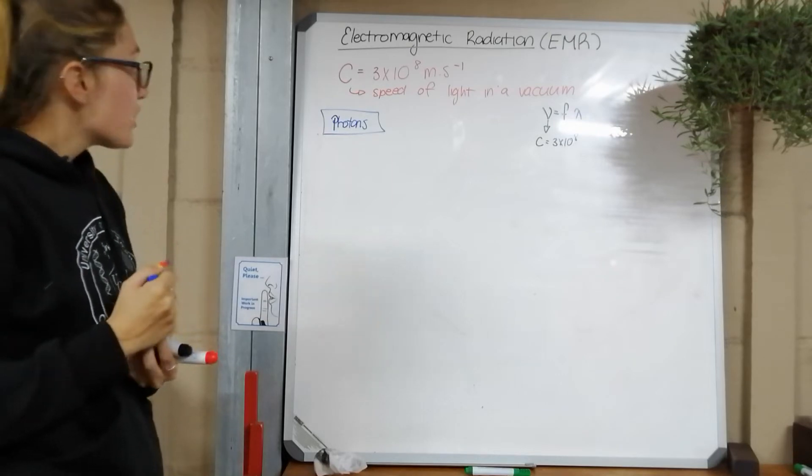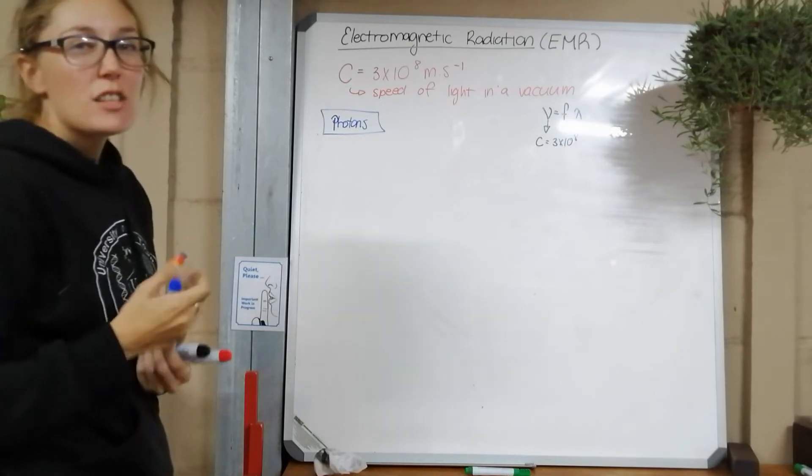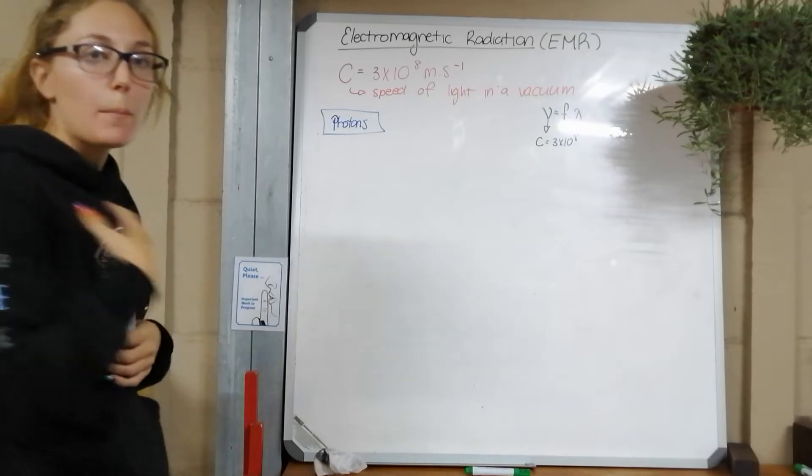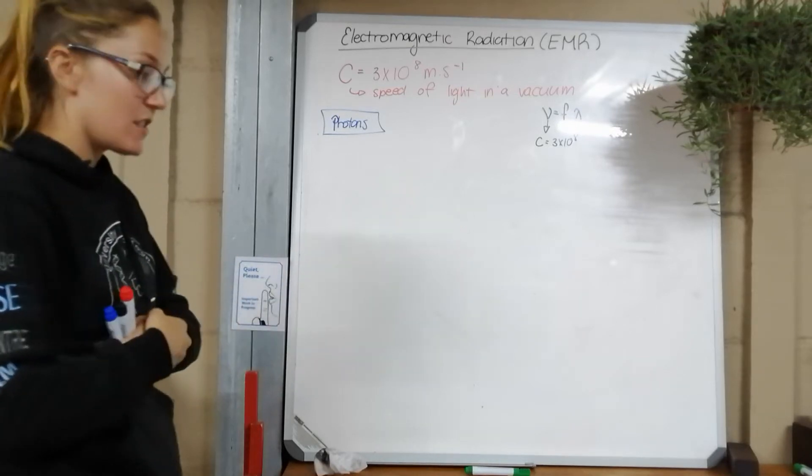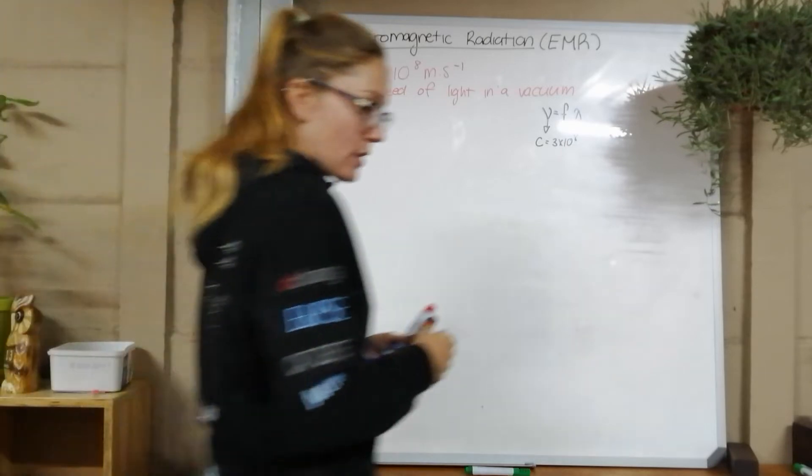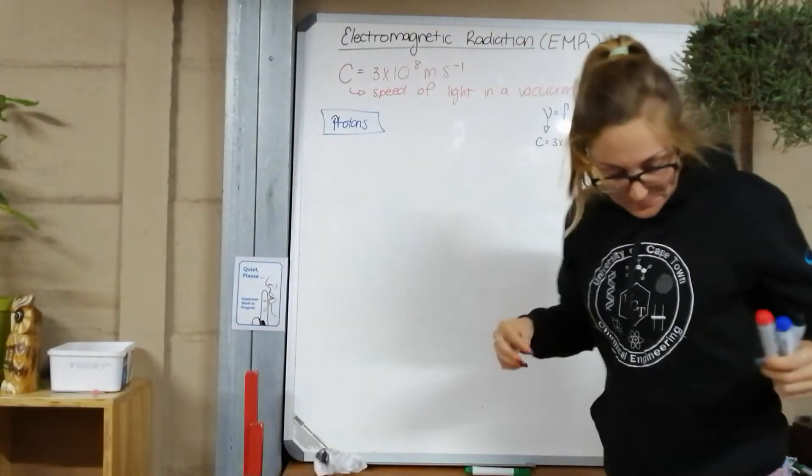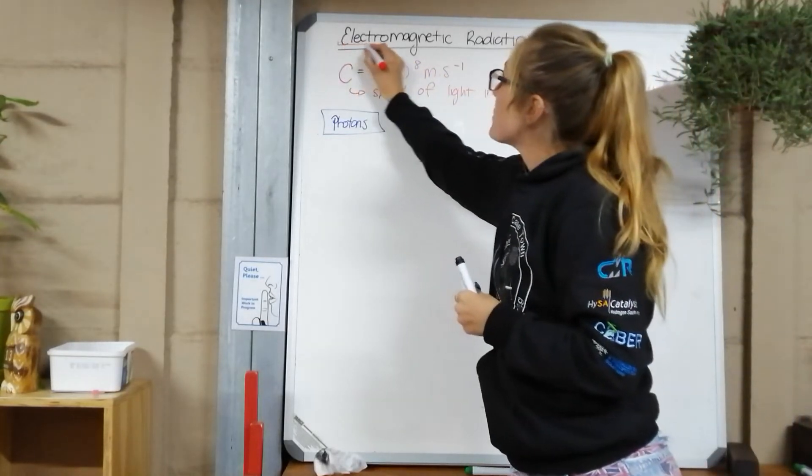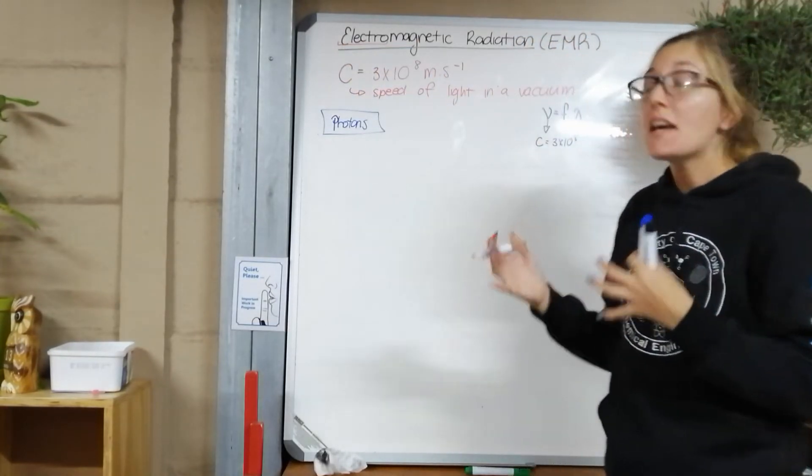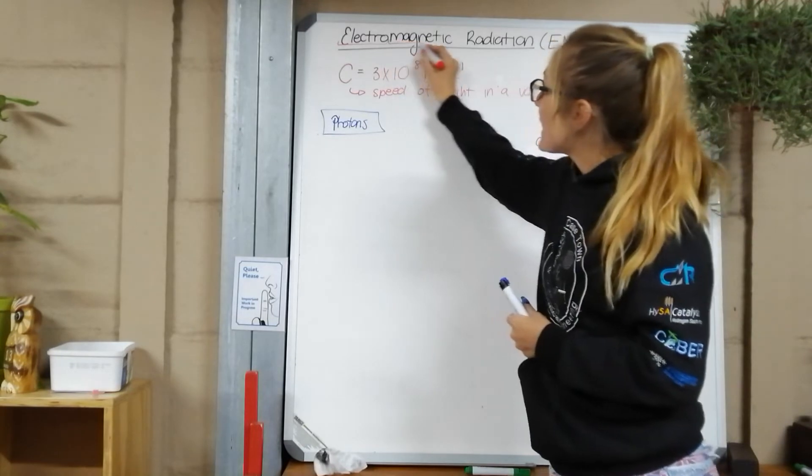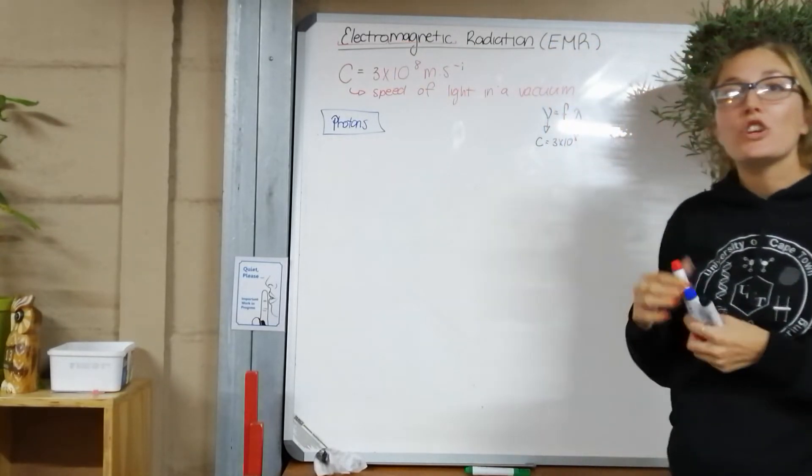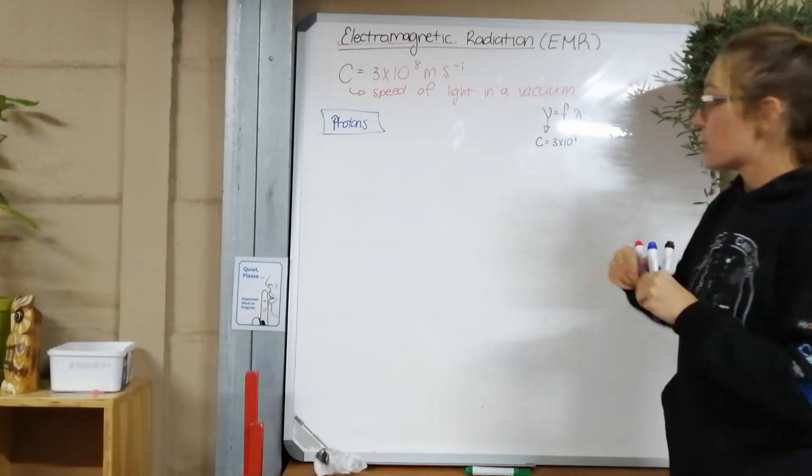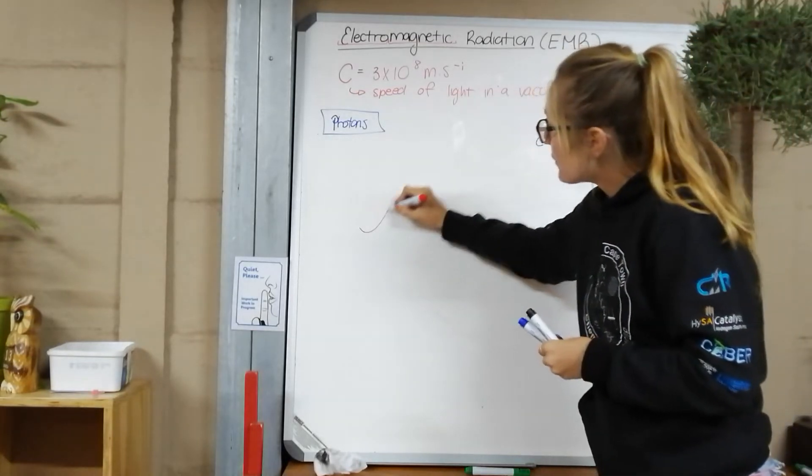Later on in the topic we'll talk about how to work out the energy of a photon. Now also important in electromagnetic radiation, there's a little bit of theory here, is how electromagnetic radiation actually propagates, how it works, how it happens. So you're going to bear with me, I'm going to try my best to draw this. We've got electromagnetic radiation, the word is made up of two parts, so we've got electric fields, and simultaneously we have magnetic fields. Now these two occur at right angles to each other.